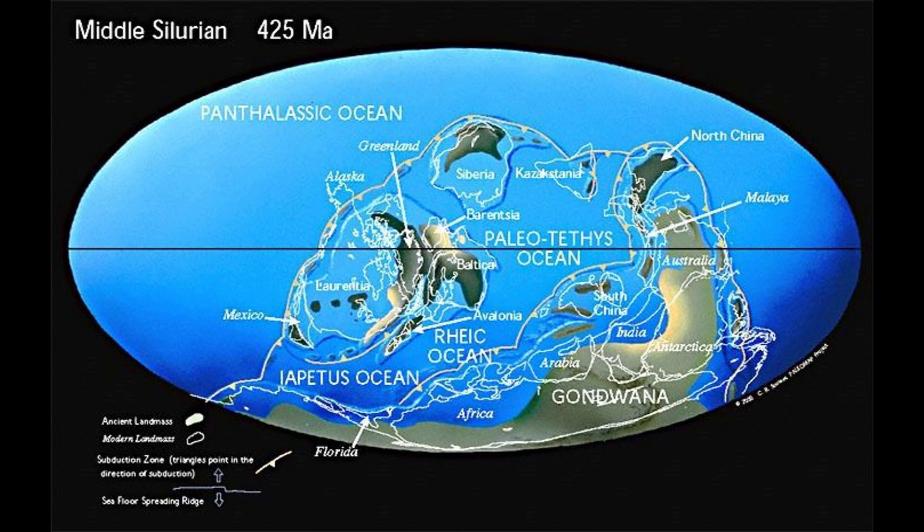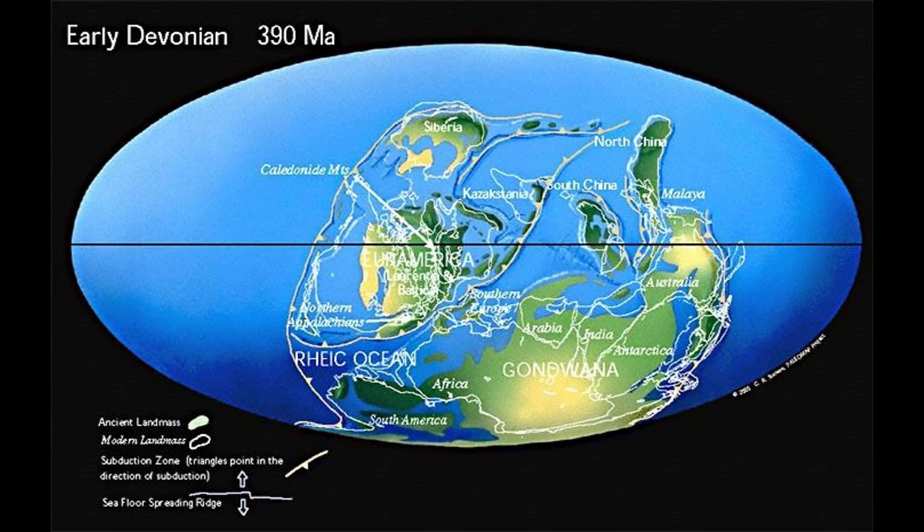Laurentia collides with Baltica, closing the northern branch of the Iapetus Ocean and forming the Old Red Sandstone Continent. Coral reefs expand and land plants begin to colonize the barren continents. By the Devonian, the early Paleozoic Oceans were closing, forming a pre-Pangaea.